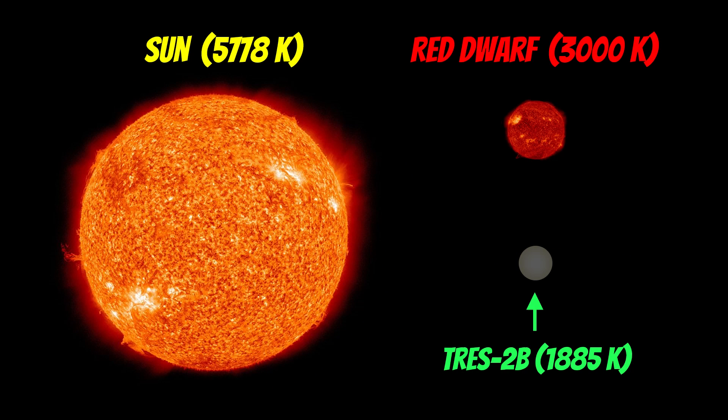That has consequences for its temperature. Because it's very close, it's obviously going to be very hot. Its temperature is just under 2,000 Kelvin. I've put the temperature of the Sun and a fairly typical red dwarf star, which is a fairly small star. A red dwarf star could be 3,000 Kelvin, plus or minus a little bit. So this planet is only just slightly cooler than a red dwarf.